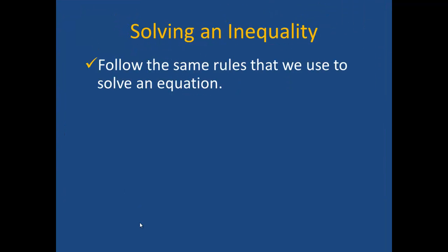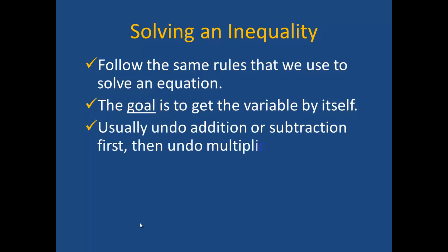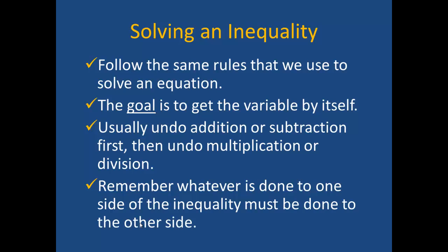When solving an inequality, we follow the same rules that we use to solve an equation. Our goal is still to get the variable by itself. Usually, we undo the addition or subtraction first, and then we undo the multiplication or division. Remember, whatever is done to one side of the inequality must be done to the other side.